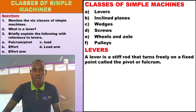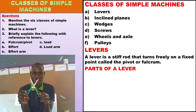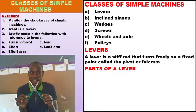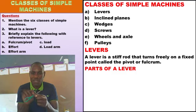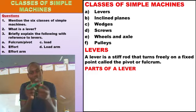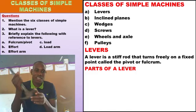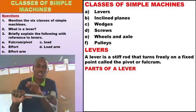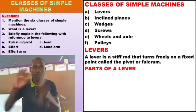Now I want us to look at the parts that make up a lever. This is a simple lever — a simple machine. It is a pair of scissors. This is what we call a lever: it is a stiff rod that turns freely on a fixed point called a pivot. These parts are stiff, and the turning point is called a pivot. This one here is a claw hammer — it is also a lever. You cannot bend it freely; that's why we say a lever is a stiff rod that turns freely on a fixed point called a pivot or fulcrum.